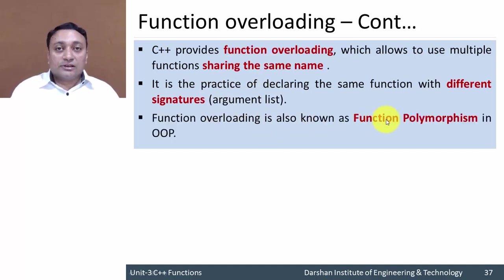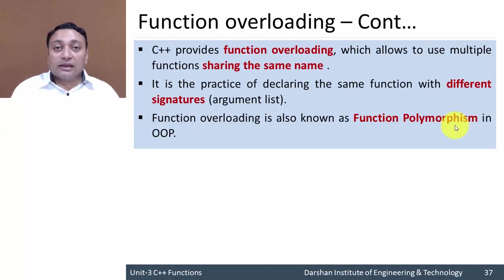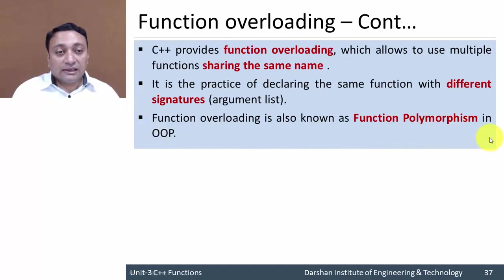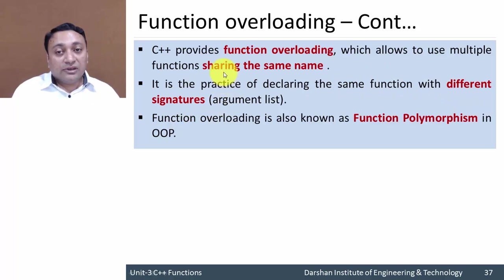Function overloading is also known as function polymorphism. Polymorphism means 'more than one form.' In our previous example, the function 'sum' had three different forms: first was adding two numbers, second was adding three, and so forth. So function overloading is just providing different signatures to functions that share the same name.